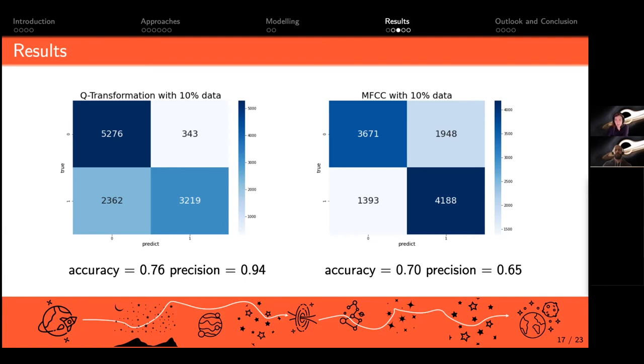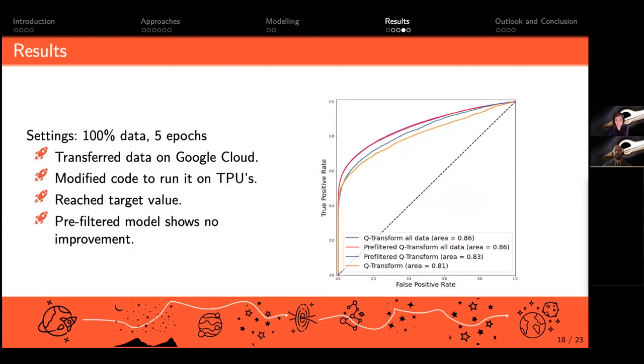On the other hand, our MFCC result had more balanced results and found more black holes, but you can't be as sure as with the Q-transformation that it really is one. Since the Q-transformation showed us better results, we continued with that approach and trained it with 100% of the data.